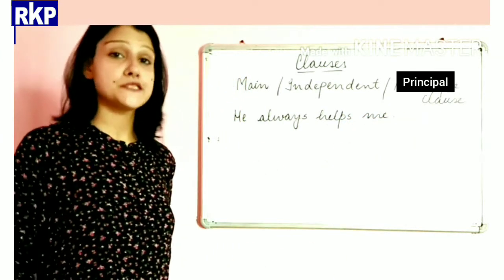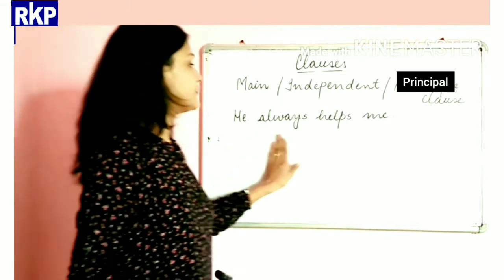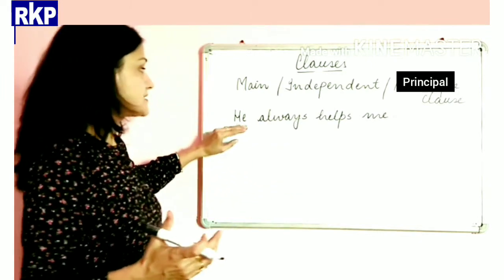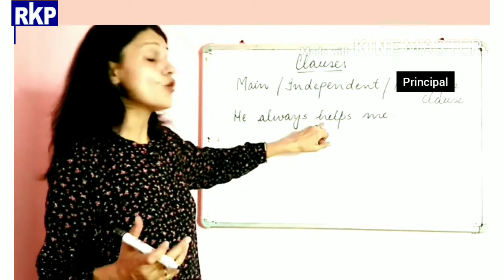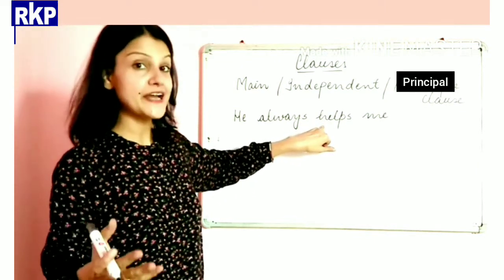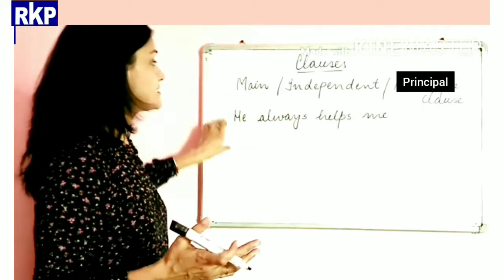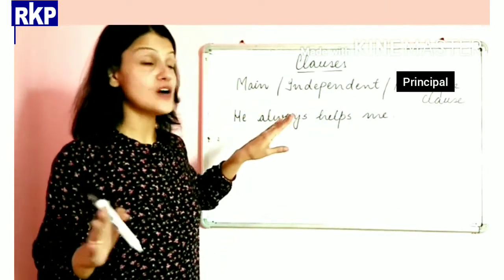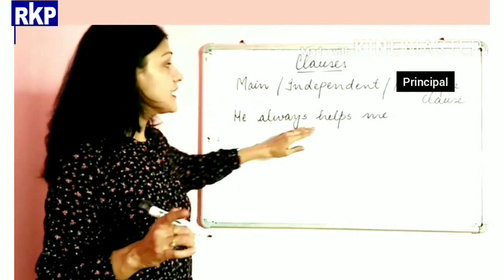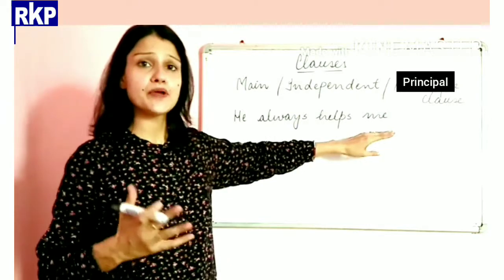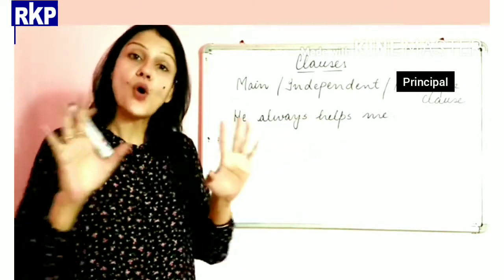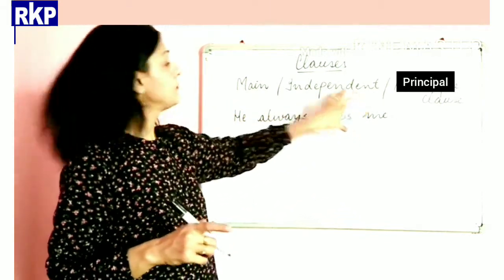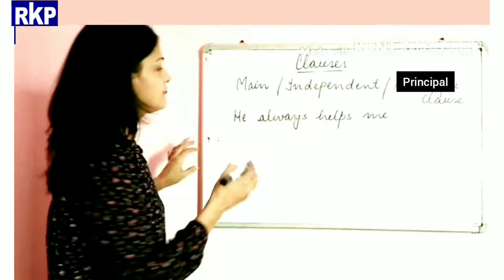Let me frame a sentence: 'He always helps me.' This sentence has complete sense, it has a subject, and it has a finite verb. So this whole thing is a clause — specifically a main clause — because it does not need anything else's help to give complete sense. It is complete on its own.